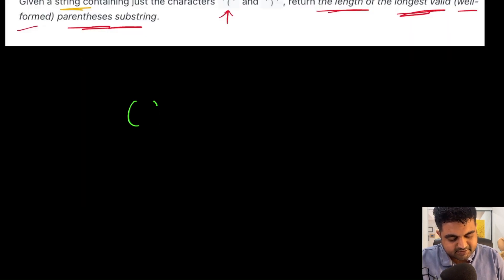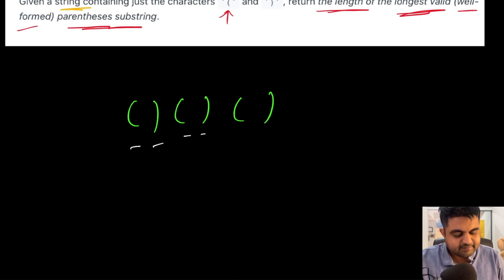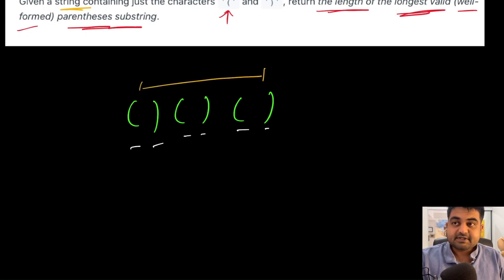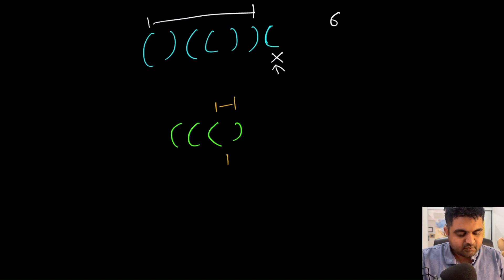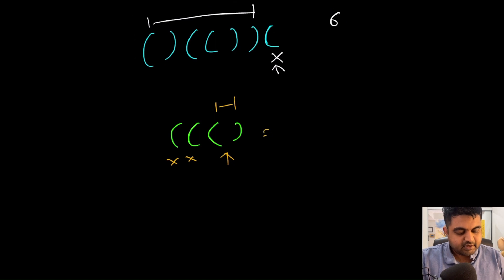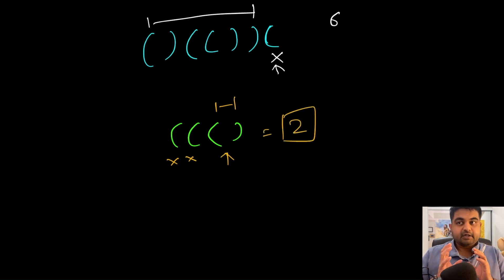Suppose we are given a string like this. We can see that all of these are valid substrings because they are coming in the correct order. Since all of them are correct, the longest valid substring is currently of six characters. Let's take one more example — suppose the string given is something like this. Then we only have a valid substring of just two characters, and the other two are not part of the valid substring. So we need to calculate the consecutive longest valid substring and return that.